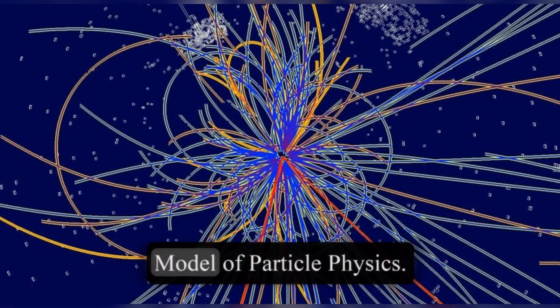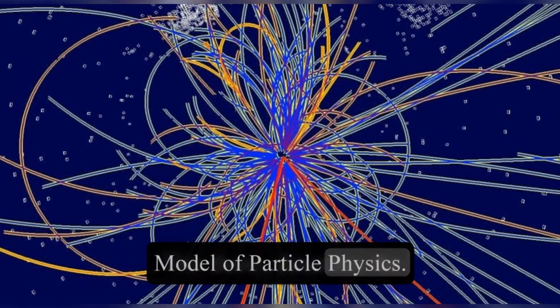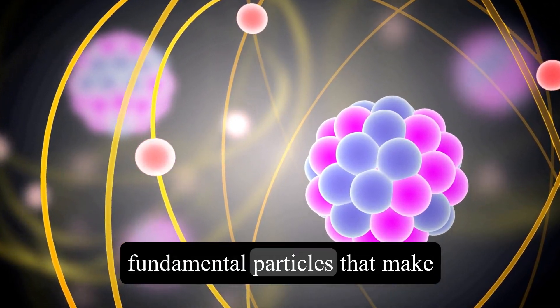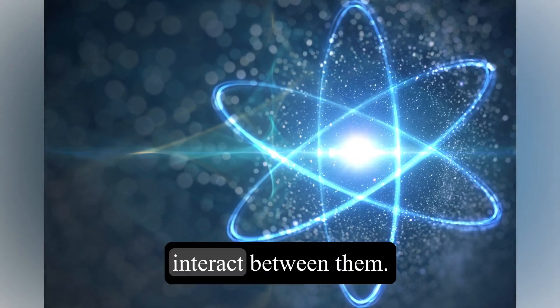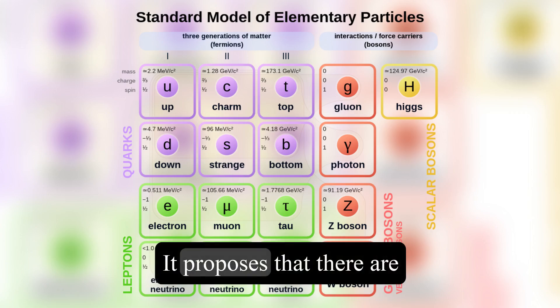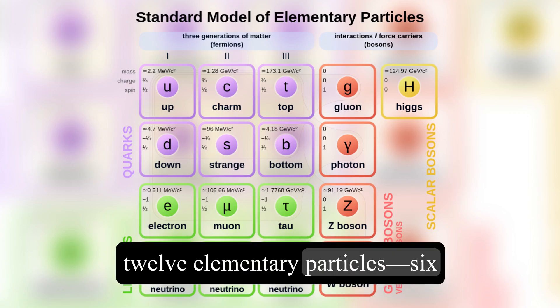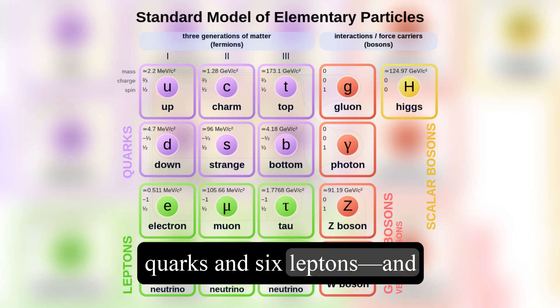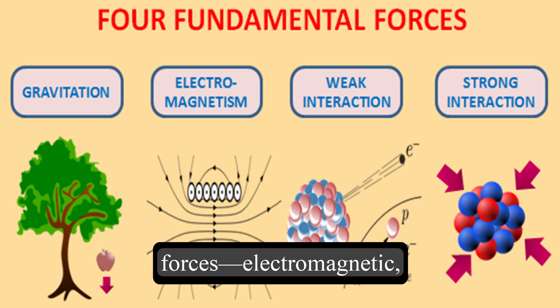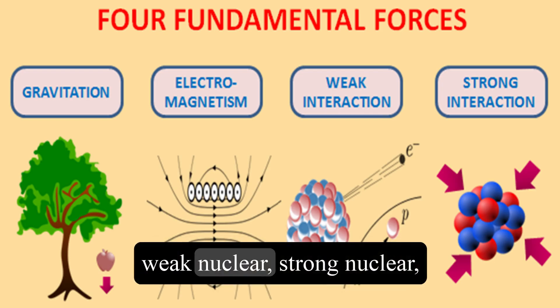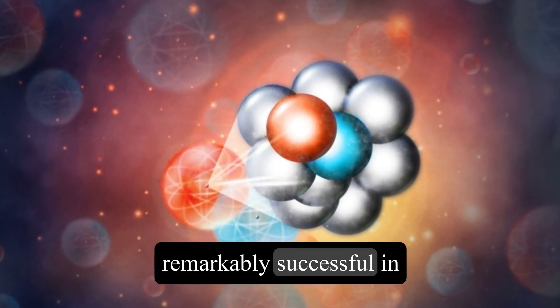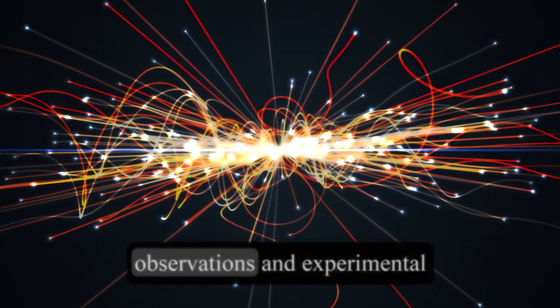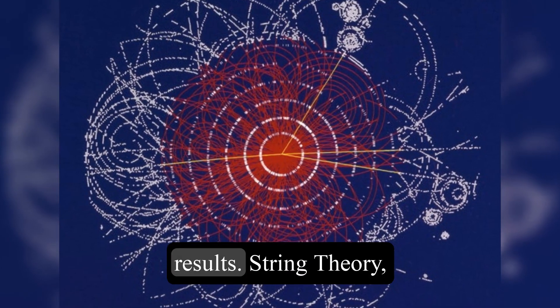Let's start with the standard model of particle physics. This theory describes the fundamental particles that make up everything in our universe, as well as the forces that interact between them. It proposes that there are 12 elementary particles, 6 quarks and 6 leptons, and 4 fundamental forces: electromagnetic, weak nuclear, strong nuclear, and gravity. The standard model has been remarkably successful in explaining a wide range of observations and experimental results.